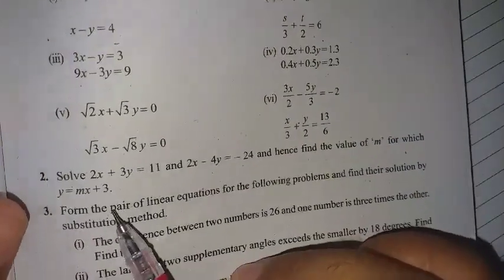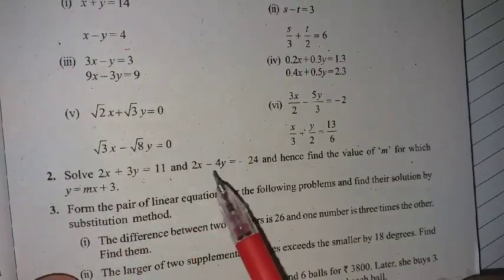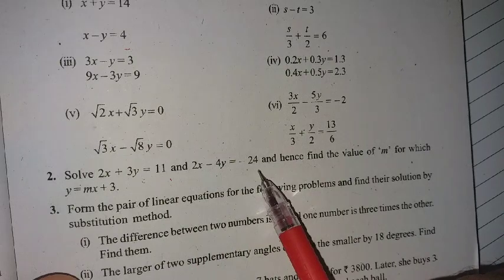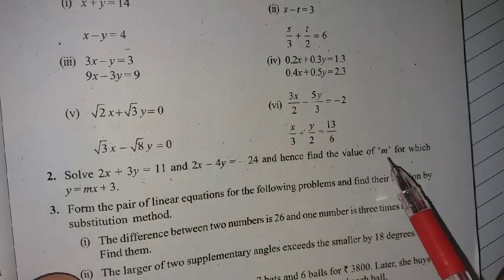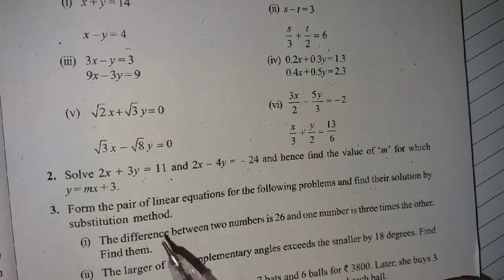Okay so here question number two is solve 2x plus 3y equal to 11 and 2x minus 4y equal to minus 24 and hence find the value of m for which y equal to mx plus 3. Okay let's solve it.